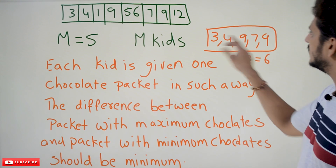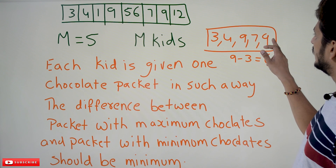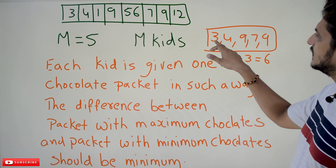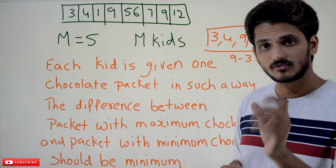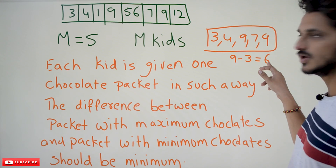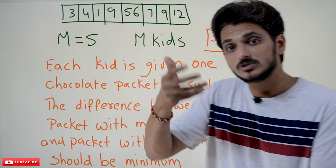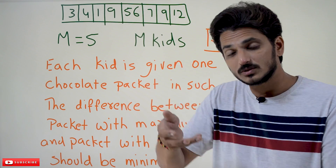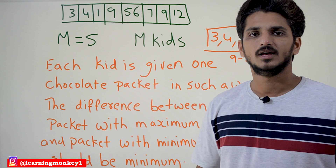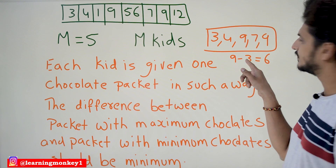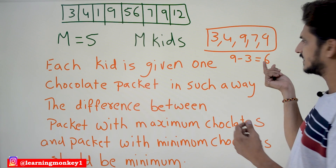The second way is 3, 4, 9, 7, 9. What is the maximum value? 9. What is the minimum value? 3. 9 minus 3 equals 6. In the previous combination we got a difference of 11; in this combination we got a difference of 6. Which one is minimum? 6 is minimum. So out of all the possibilities, we have to pick the one that gives the minimum difference value. Our output is 6.